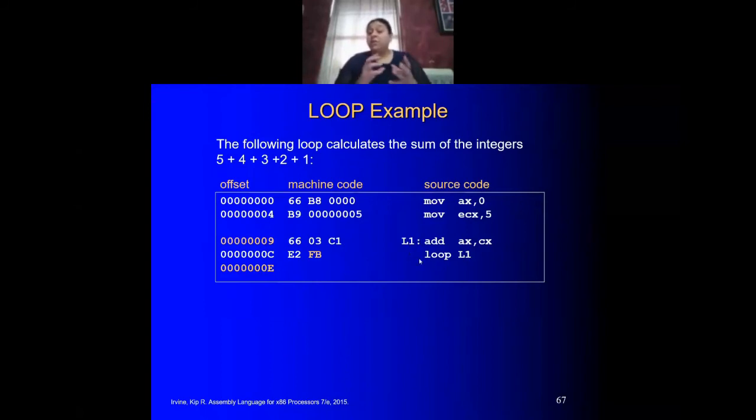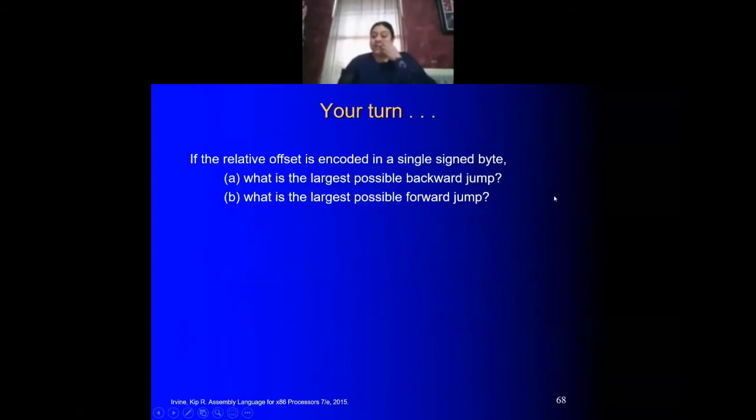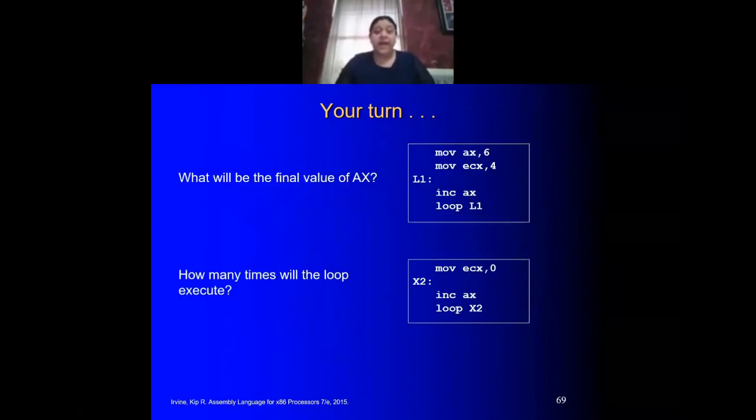Once we reach 0, automatically your loop gets out. So it continues to whatever line of code is after loop L1, and it'll just finish your program that way. This is just FYI: the largest possible backward jump is negative 128, and the largest possible forward jump is positive 127. It aligns with that byte that we have.